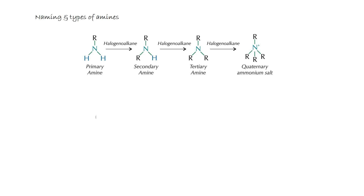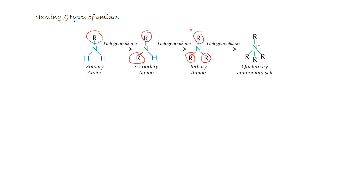Much like when we've looked at the alcohol groups, we have different types of amines depending on the number of R groups attached to the central nitrogen. The primary amine has one alkyl group attached. Secondary amine has two alkyl groups attached. Tertiary amine has three alkyl groups attached. And then the quaternary ammonium salt has four alkyl groups and importantly it has a positive charge.